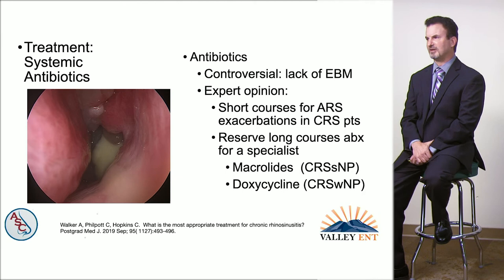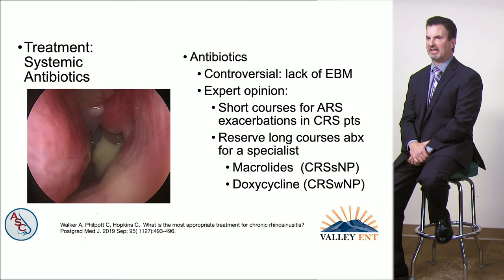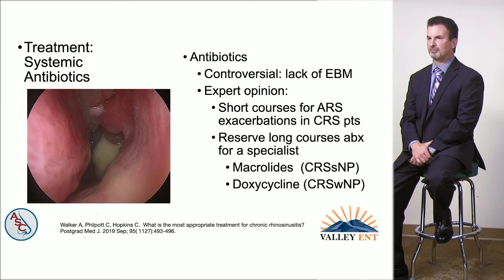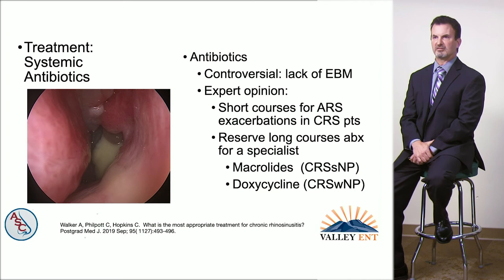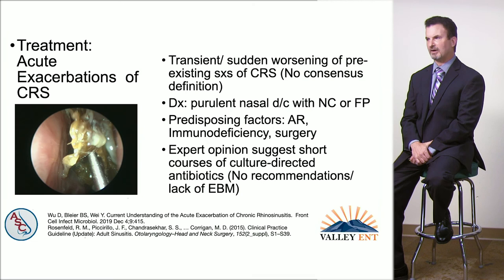Systemic antibiotics are also controversial as they lack evidence-based medicine. Expert opinion suggests short courses for acute rhinosinusitis exacerbations. You can also use long courses of antibiotics that have anti-inflammatory properties — some antibiotics have anti-inflammatory rather than antimicrobial properties. Macrolides have been found beneficial in patients with neutrophilic inflammation or without polyps, and doxycycline has been found beneficial in patients with eosinophilic inflammation or with polyps.